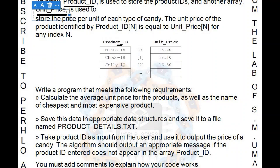There are two different arrays: product_id and unit_price. In the third position — second index number since indexing starts from zero — the name is jelly1q. The price for this product would be at the second index number in the unit_price array. Both arrays are linked by the index number, meaning the product at a certain index has its price stored at the same index in the unit_price array.